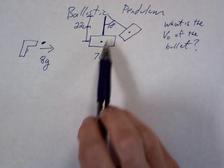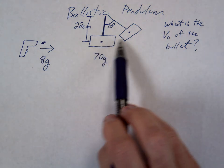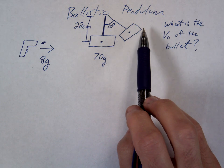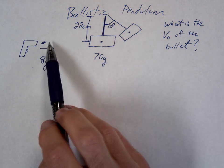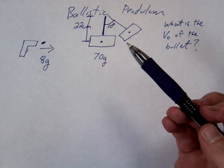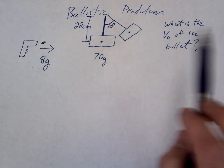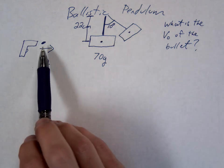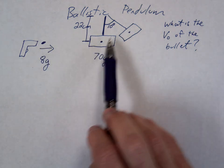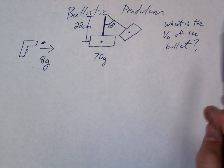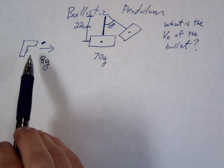Okay, so again, our bullet's coming in, it's going to enter the block, the block's going to rise up. Now to solve this problem, to figure out the velocity of the bullet, we're actually going to go backwards. We've kind of done a problem like this before when we were doing the bazooka, where we had this moving this way and we figured out what happened at the end. Now we're going to go backwards and figure out what happened at the beginning.